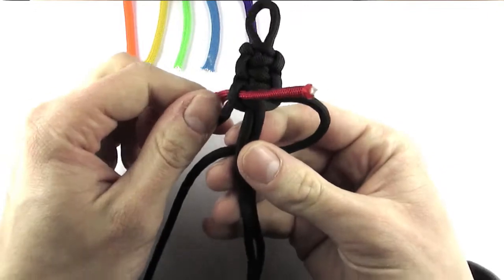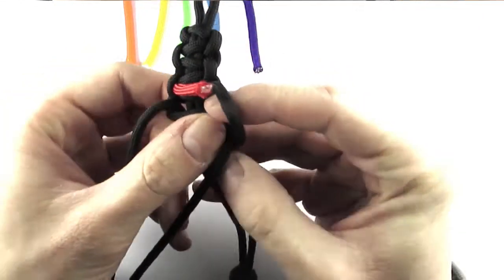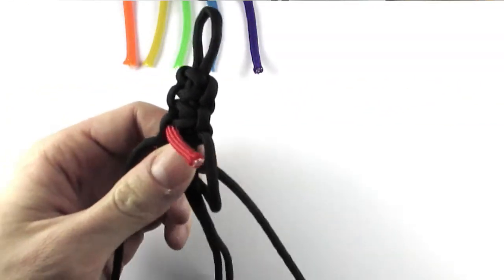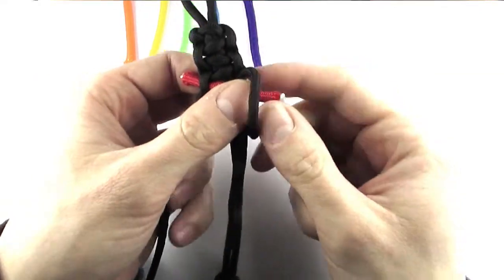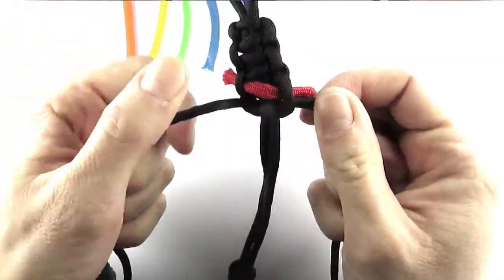And then I'm going to make another one to the right side and I'm going to insert the other end onto the right side through the knot and then tighten it up.